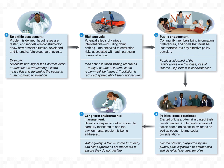Here's an example of using the scientific method for an environmental problem. There's a scientific assessment where the problem is defined, the hypothesis is tested, and models are constructed to show how the present situation developed and predict future events. There's risk analysis — if we intervene, what could be prevented? The public is often engaged, especially if government money is involved, to give feedback before proceeding. There are also political considerations and potentially an environmental impact statement. Long-term environmental management ensures results of any action are carefully monitored for negative consequences.